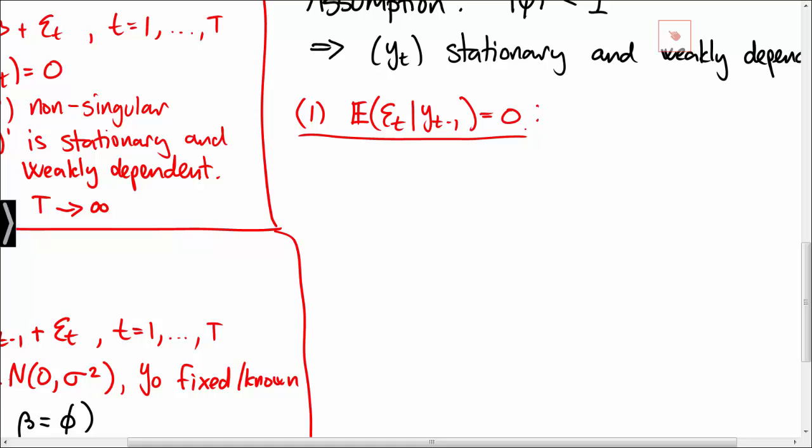Note that yt minus 1 is simply given by phi times yt minus 2 plus epsilon t minus 1.